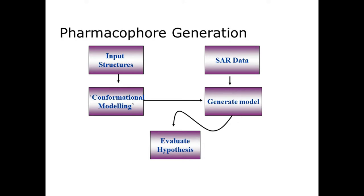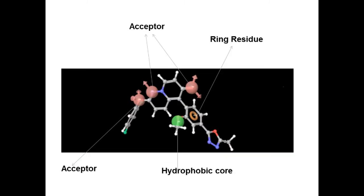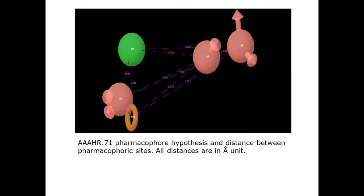Finally, the different hypotheses were evaluated and the statistically significant atom-based 3D QSAR model was obtained using the pharmacophore hypothesis AAAHR-71. The figure shows a pharmacophore containing three acceptors, one hydrophobic core, and one ring residue. The figure also shows the pharmacophore hypothesis AAAHR-71 and the distances between pharmacophore sites. All distances are in Angstrom units.